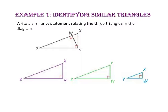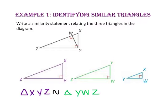Now that all three triangles are oriented the same way, I'm going to name mine like this: triangle X, Y, Z is similar to triangle Y, W, Z is similar to triangle X, W, Y.